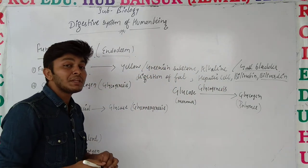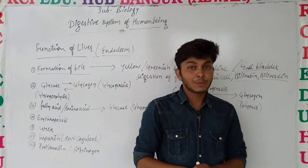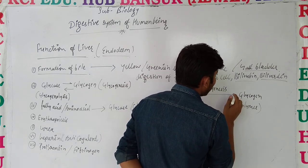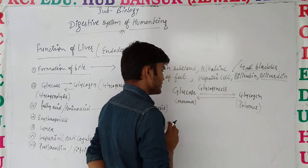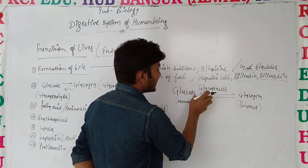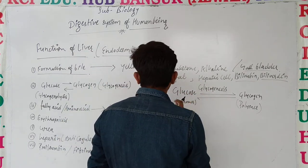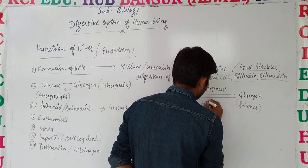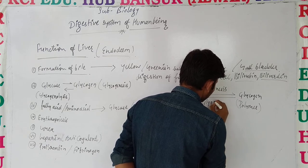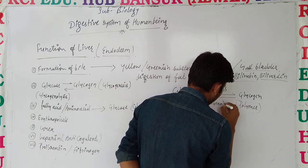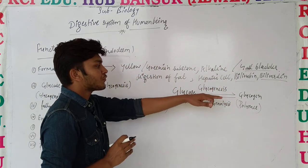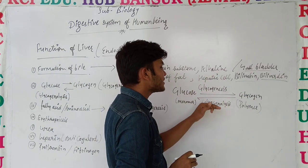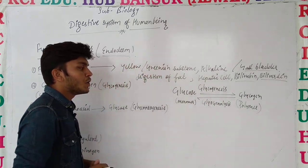But जैसे ही body के अंदर energy की deficiency हो जाती है और हमें glucose चाहिए, उस condition में यह जो glycogen है, this glycogen is converted back into glucose, and that process is known as glycogenolysis. So the formation of glycogen is glycogenesis, and the breakdown of glycogen is glycogenolysis.